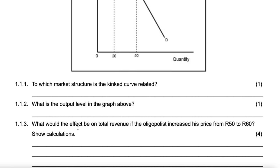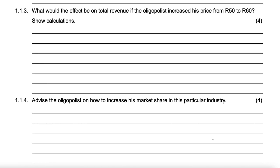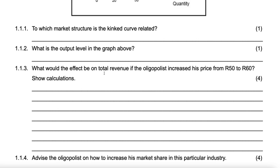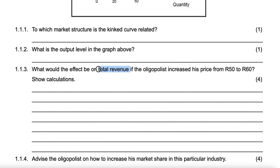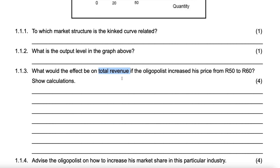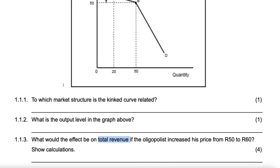The next question asks about the effect on total revenue — tell us if total revenue is going to increase or decrease and by how much — if the oligopolist increased his price from 50 rand to 60 rand. Show calculations.